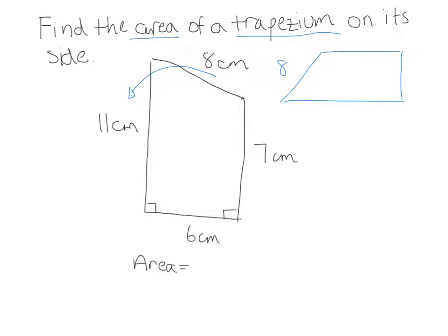that would be 8, that would be 7, that would be 11, and that would be 6. So now it looks more like a trapezium, and the area for a trapezium is one-half a plus b times h.